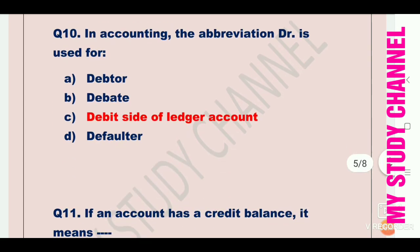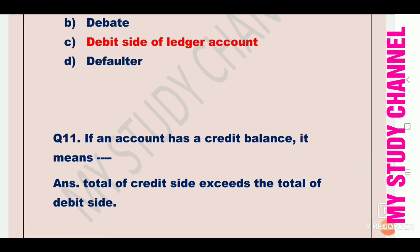Next question: if an account has a credit balance, it means the total of credit side exceeds the total of debit side. If someone's account has a credit balance, it means debit is less and credit is more — that is why the account shows a credit balance. Answer: total of credit side exceeds the total of debit side.